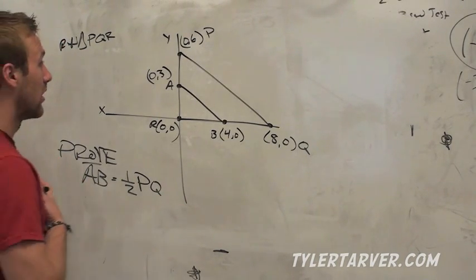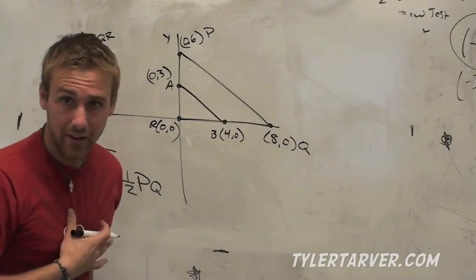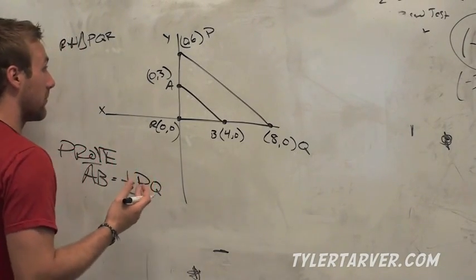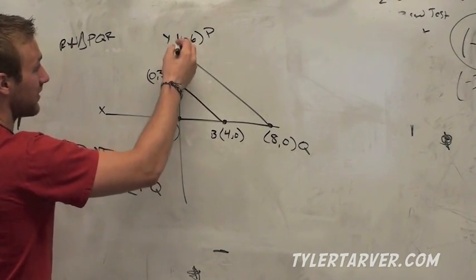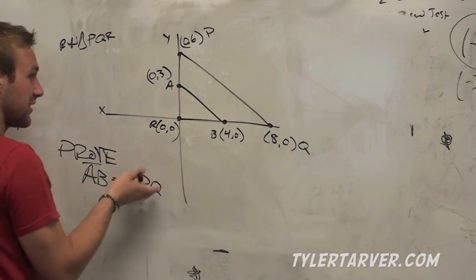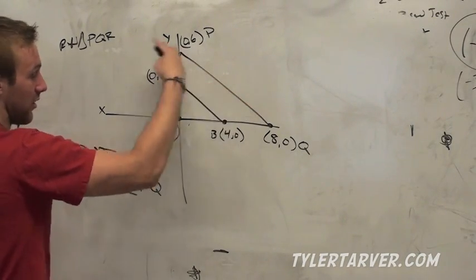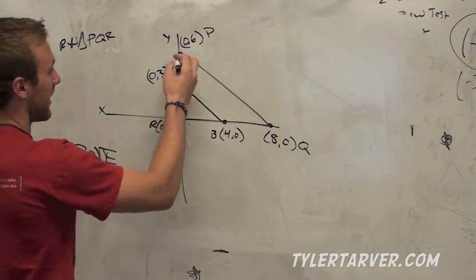Easiest way for me to do it, like personally, what I would do, I would say, okay, I've got two right triangles here. I'm a Pythagorean theorem kind of guy. I like the Pythagorean theorem. So I'm going to do the Pythagorean theorem and find the length of this and this, and then I can compare it and see if I got it right. See if this is actually half of that whole thing.